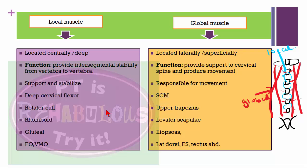First of all, we are going to see local muscles. Local muscles are located centrally or deep. The main function of local muscles is to provide intersegmental stability from vertebra to vertebra — they support and stabilize. For example: deep cervical flexor, rotator cuff muscles, rhomboids, gluteus, external oblique, and vastus medialis obliquus — these are all local muscles.